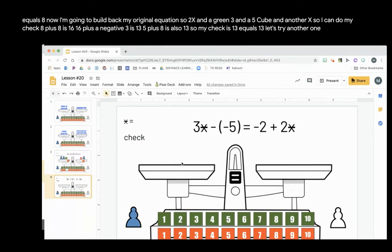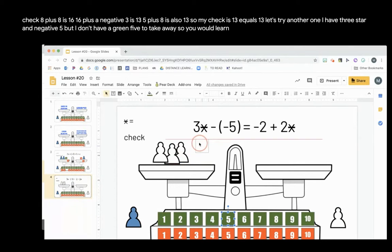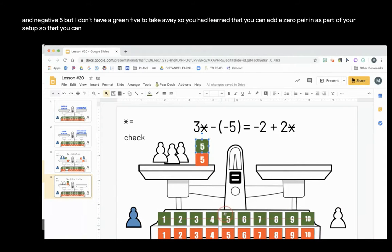Let's try another one. I have 3 star minus a negative 5. But I don't have a green 5 to take away. So you had learned that you can add a zero pair in as part of your setup so that you can subtract your negative 5. So 3 star minus a negative 5 is the same as 3 star plus positive 5.